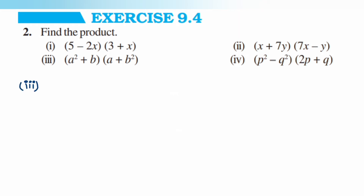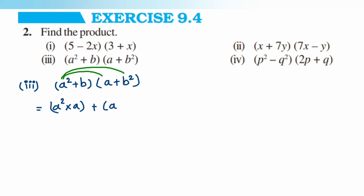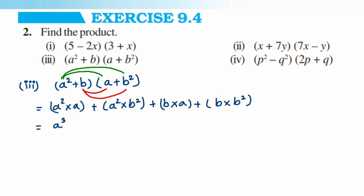The third question is (a squared plus b) multiplied by (a plus b squared). Multiply a squared with a, then a squared with b squared, then b with a, then b with b squared. This gives: a squared times a is a cubed, plus a squared b squared, plus ab, plus b cubed.